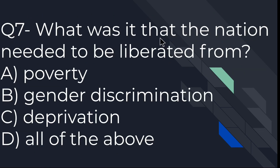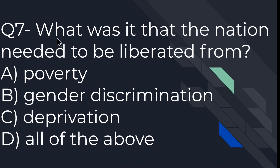What was it that the nation needed to be liberated from? The options are poverty, gender discrimination, and deprivation. What was the reason? All three are the right options, so the right option is D — all of the above — because the nation wanted to be free from all three of these problems.